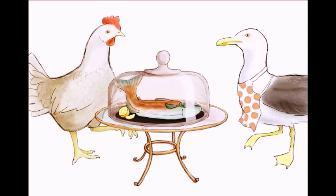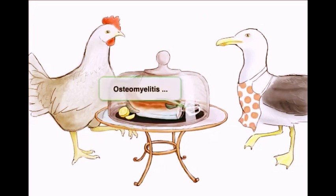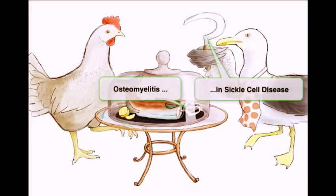One of the important clinical features to remember for Salmonella typhi is that it's the number one cause of osteomyelitis in patients with sickle cell disease. We'll erase the head of the salmon and expose the bones to help you remember osteomyelitis. Then we'll add a sickle to the hand of the seagull looming ominously right above the bone — that should be a strong enough association.